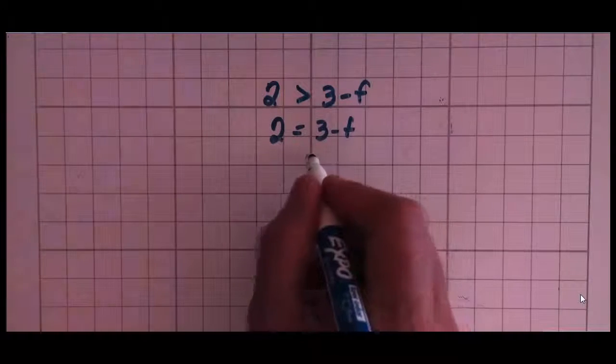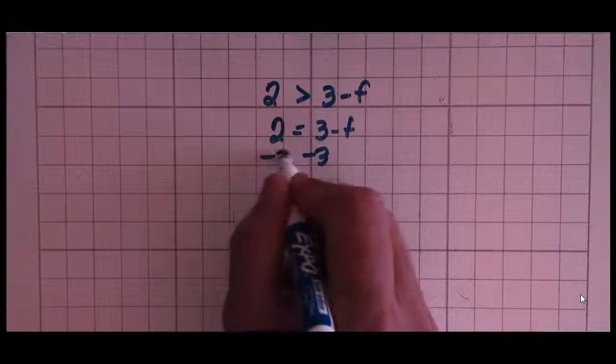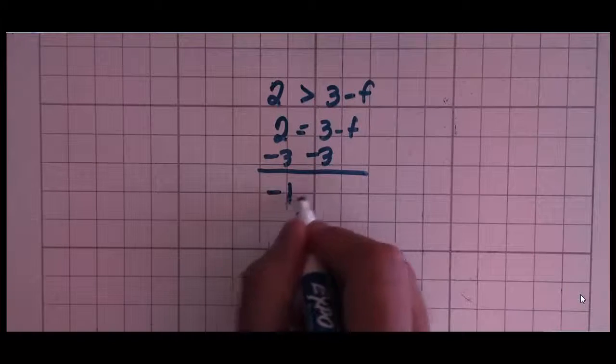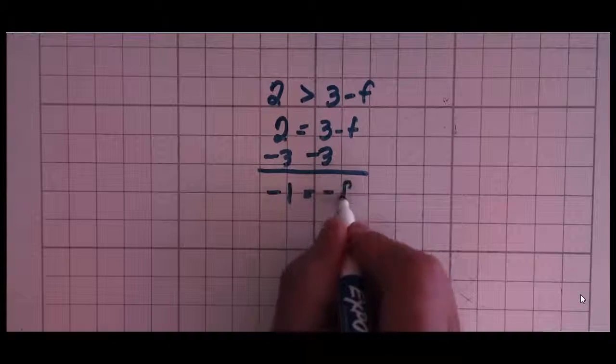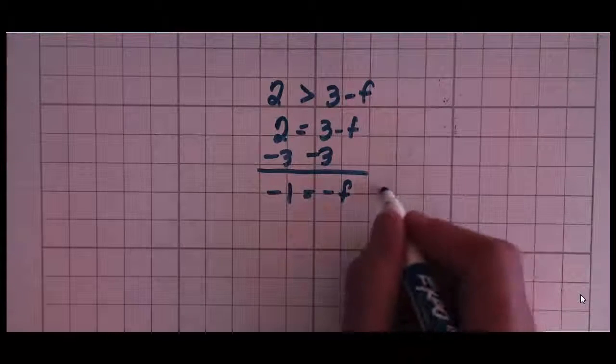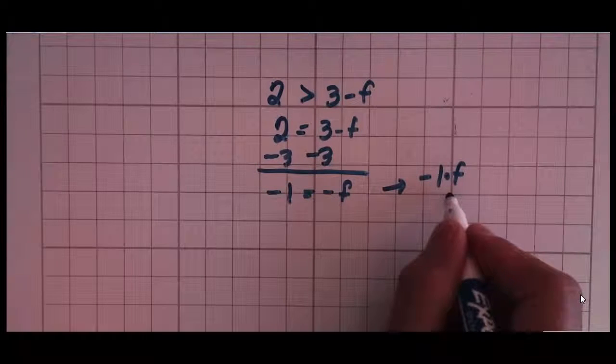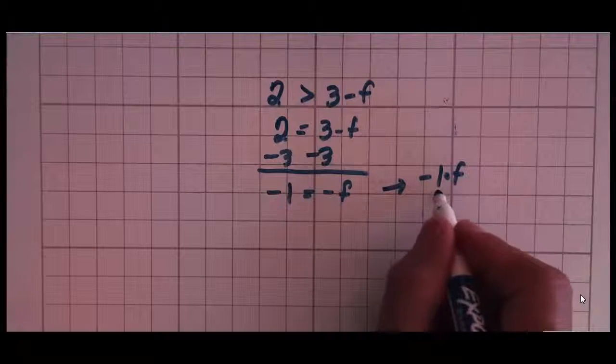Again, pretend like it's an equal sign. I'm going to subtract 3 from both sides. 2 minus 3 is negative 1. Negative 1 equals negative f. And again, remember negative f simply is negative 1 times f. We don't write the negative 1 because we're basically lazy, but that's what it means.